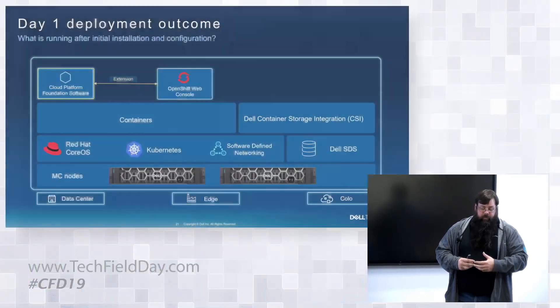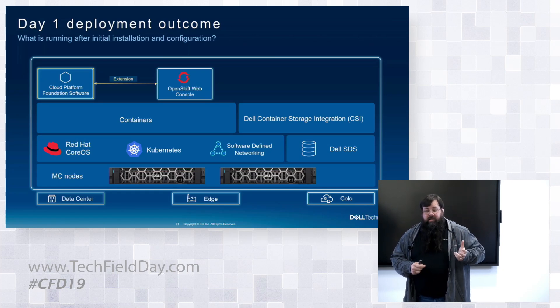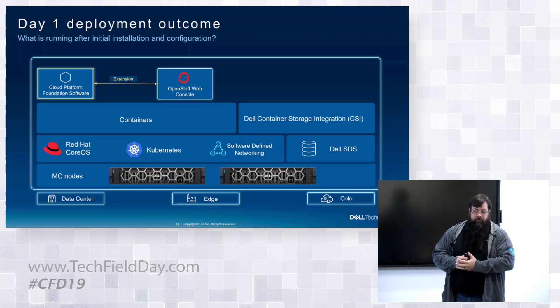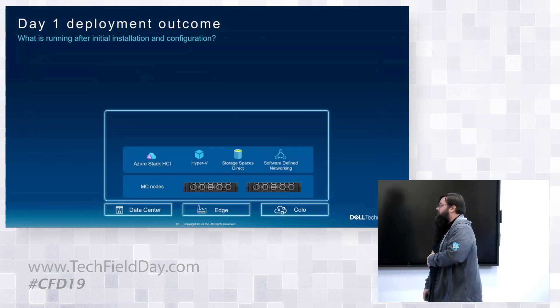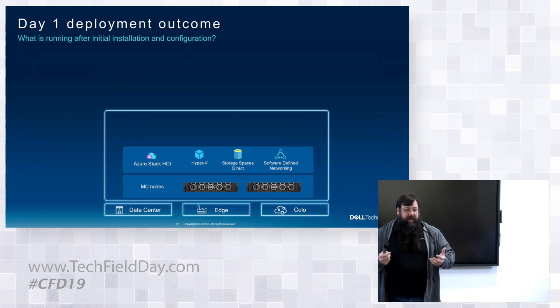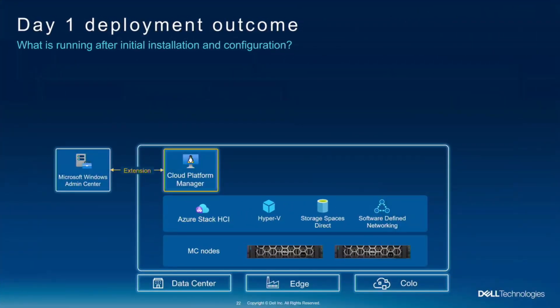That Cloud Platform Foundation software — which is really the amazing part — is actually projected into the OpenShift web console. For the Azure deployment outcome, it's very similar, using the same MC nodes. The difference is you're using HCI OS — the Azure Stack HCI layer — Storage Spaces Direct, Hyper-V, and the Microsoft SDN stack. The Apex Cloud Platform software is running inside a Cloud Platform Manager VM on top of Hyper-V, running the same Cloud Platform Foundation software — instead of native containers, running containers inside the VM.